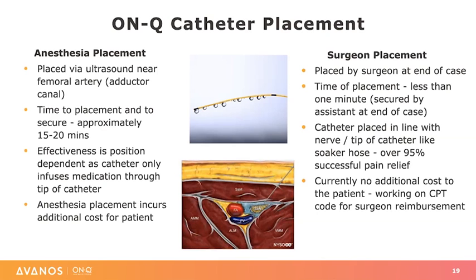With surgeon placement — which I elected to do after doing the other option for about two months — you avoid costly delays during the case. The time to place the catheter is about 45 seconds to a minute at the most. The catheter is placed in line with the nerve, with the distal two and a half inches of the catheter acting like a soaker hose. Since you place it in line with the nerve and there's this long area that elutes medication, it is more likely to be in contact with the nerve. I found that about 95% of the time the catheter placement is effective. Currently it adds no additional cost to the patient.